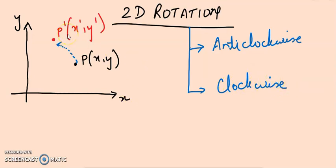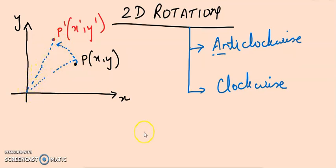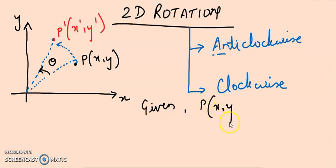We have anti-clockwise rotation and clockwise rotation. When I say I am moving from right to left, that means I am going in anti-clockwise rotation. Now, for doing any type of rotation — either clockwise or anti-clockwise — what I will be needing is an angle, which we call theta.